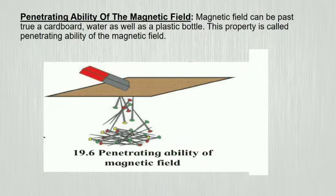Penetrability of magnetic field. Magnetic field can be passed through a magnet, water as well as plastic bottle. This property is called penetrating ability of magnetic field. To understand this, let's perform this activity.